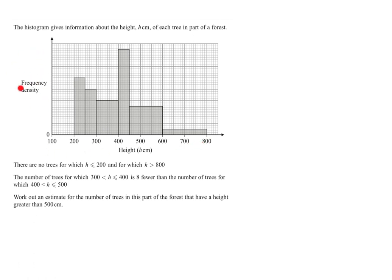So this is going to cause a bit of a problem. It tells us that there are no trees less than 200, no trees greater than 800. That's clearly shown on the diagram. The number of trees for which h is between 300 and 400 is 8 fewer than the number of trees between 400 and 500.